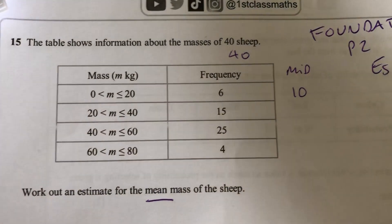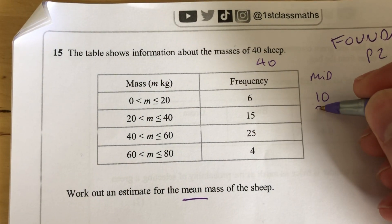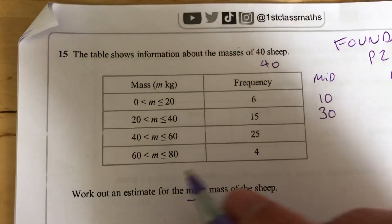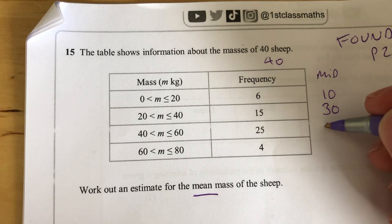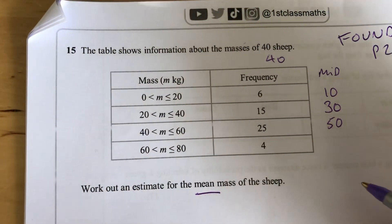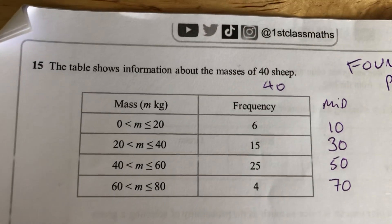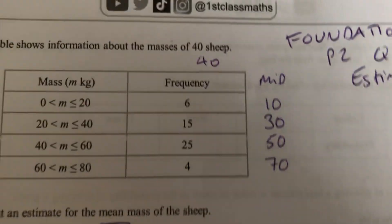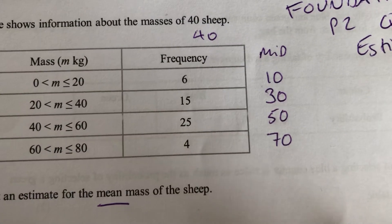For the next category, 20 to 40, we'll use 30. 40 to 60, we'll use 50. 60 to 80, we'll use 70. We're just going to make the assumption that that's a fair approximation for their mass.